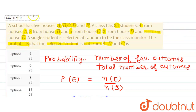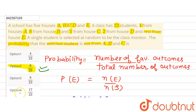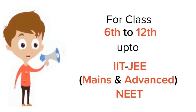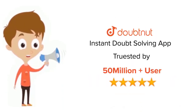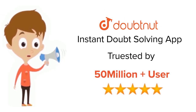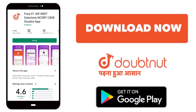Option one — four divided by 23 — is not correct. Option two — six divided by 23 — is the correct answer. Option three is eight divided by 23, and option four is seventeen divided by 23, both incorrect. For class 6 to 12, IIT-JEE, and NEET level, trusted by more than 5 crore students — download the DoubtNut app today.